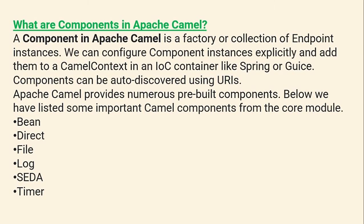What are the components in Apache Camel? A component in Apache Camel is a factory or collection of endpoints. We can configure components explicitly and add them to the Camel context in an IoC container like Spring or Guice. Components can also be auto-discovered using URIs.